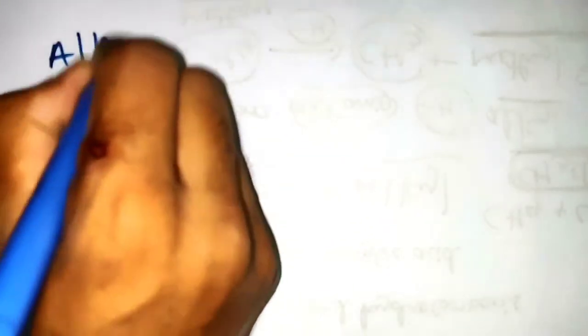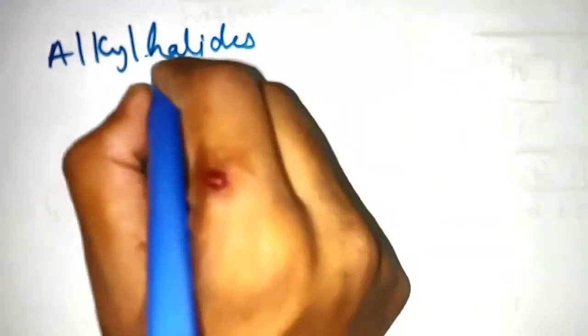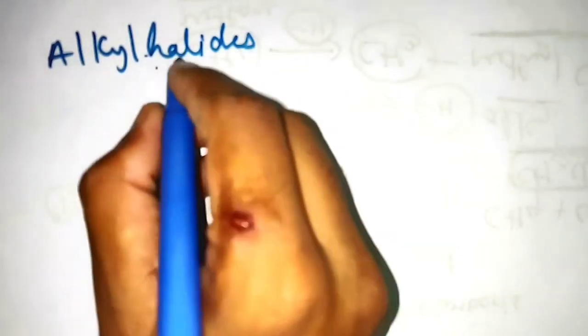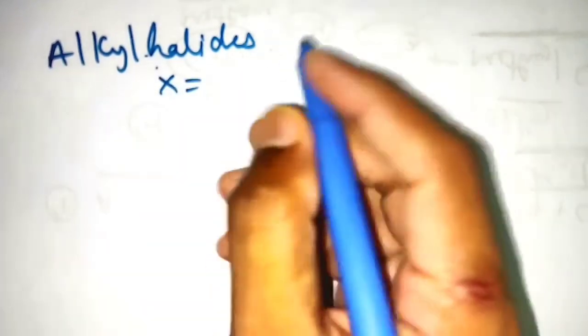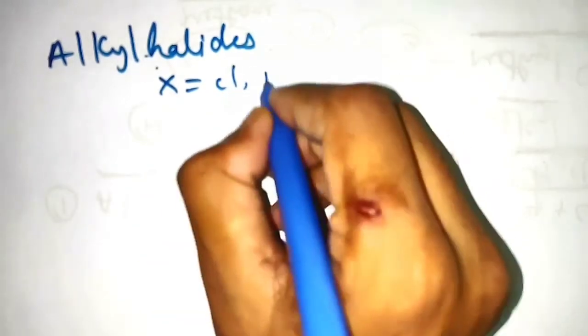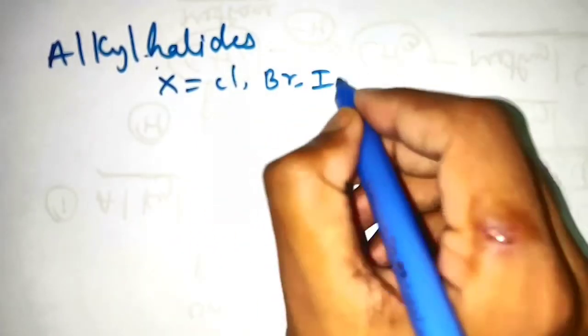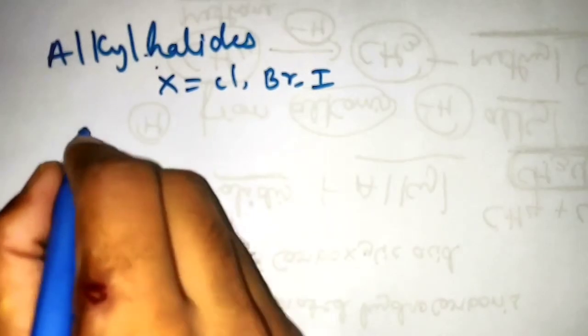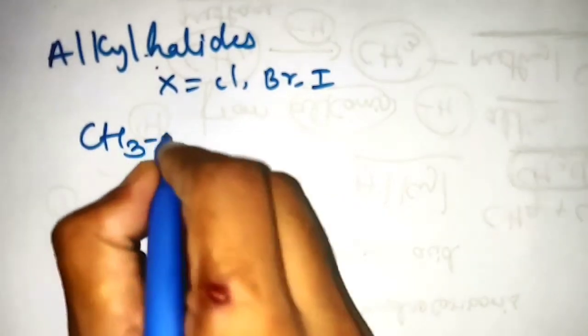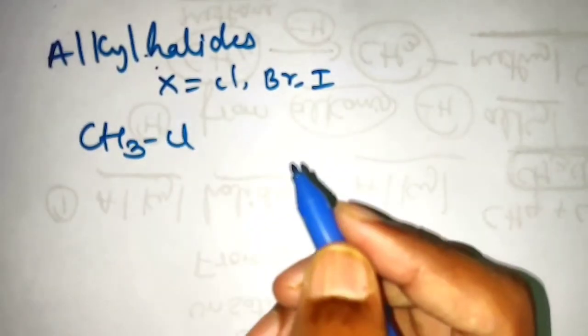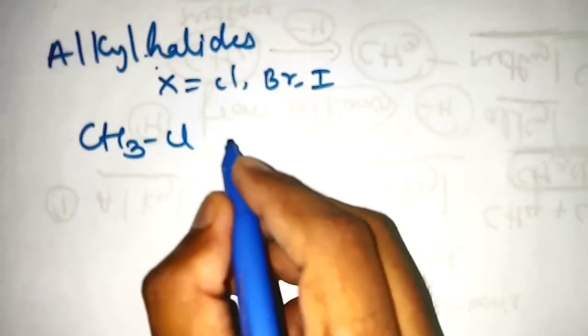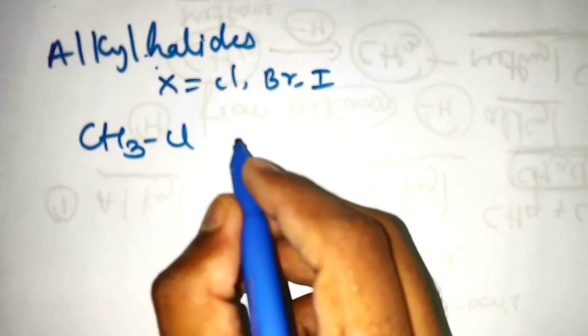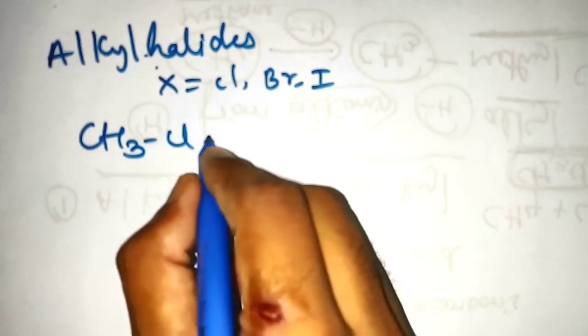When we take alkyl halides, the halogen group X can be chlorine, bromine, or iodine — not fluoride. When you take the alkyl halide, for example CH3Cl, we have to do reduction in the presence of zinc. We have to do the reduction in the presence of zinc.